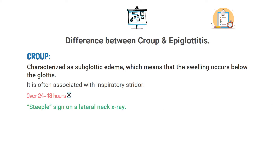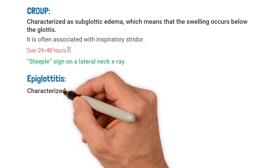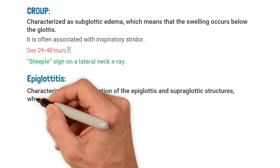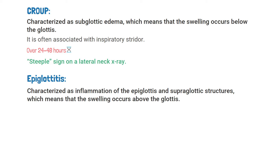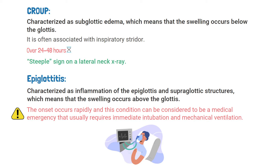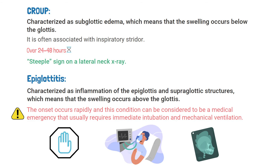Epiglottitis, on the other hand, is characterized as inflammation of the epiglottis and supraglottic structures, meaning the swelling occurs above the glottis. With epiglottitis, the onset occurs rapidly and this condition can be considered a medical emergency that usually requires immediate intubation and mechanical ventilation. When epiglottitis is present, you should look for the thumb sign on the lateral neck x-ray.